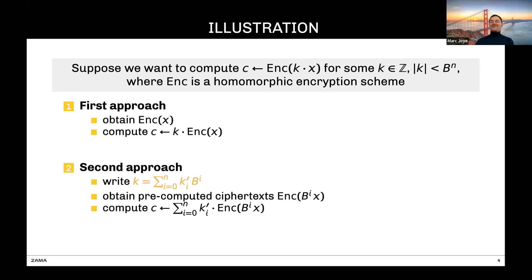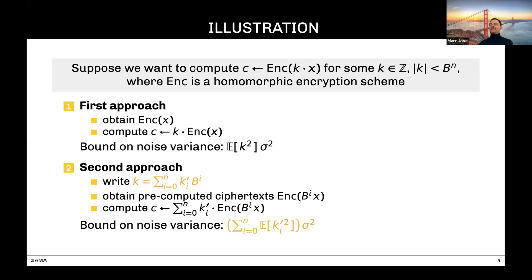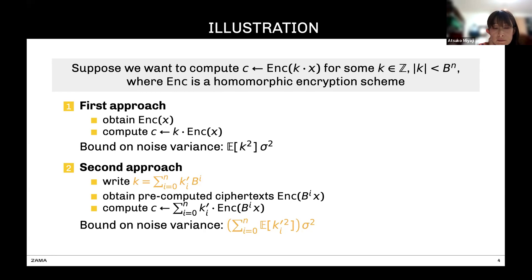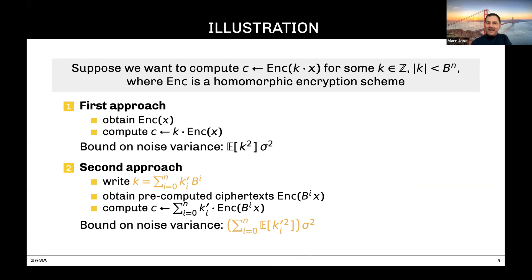There is another way to compute k times x. Instead of directly multiplying the encryption of x by k, you could first decompose k in some radix b, then obtain the encryption of b^i times x, and take a linear combination of all the ciphertexts to get the encryption of k times x. The advantage of the second approach is in terms of noise variance: the first approach gives variance proportional to k squared, while the second gives variance proportional to the sum of squares of the digits of k — which is smaller.